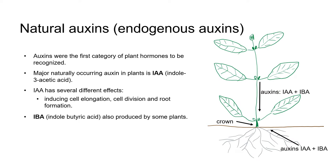Auxins were the first category of plant hormone to be recognized back in the 1930s. The main naturally occurring auxin in plants is a compound called indole-3-acetic acid, which is usually shortened to IAA. IAA has several different roles in the plant, including inducing cell elongation, cell division and root formation. A second auxin called IBA, indole-butyric acid, is also produced by some plants, but in much smaller amounts than IAA.